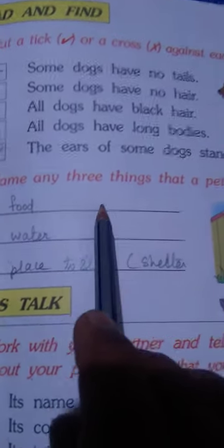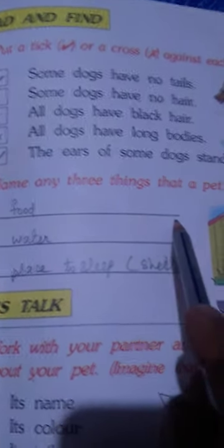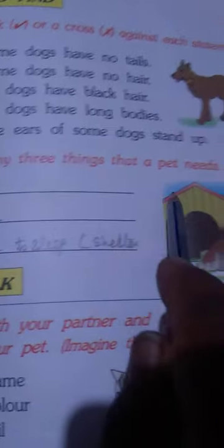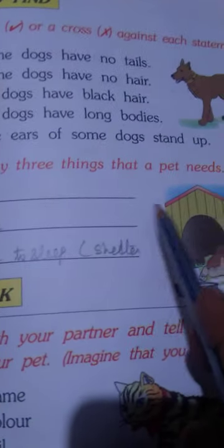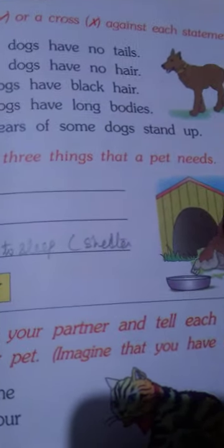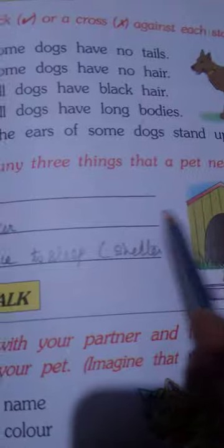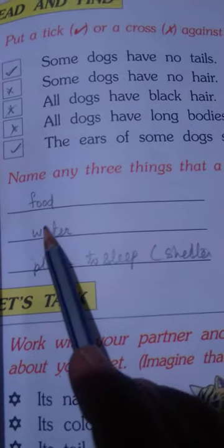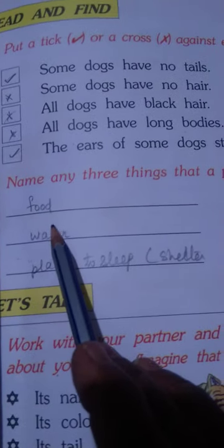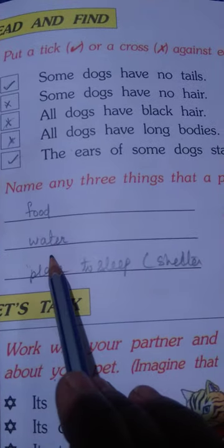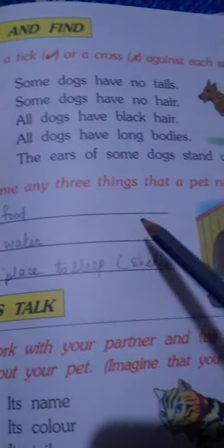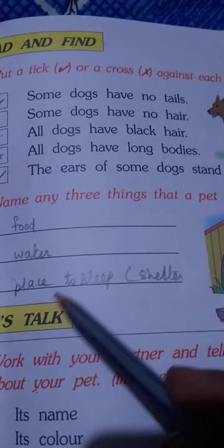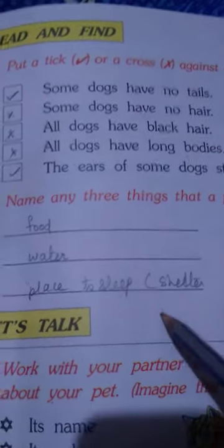Now, name any three things that a pet needs, children. What do they need? Food, water, and a place to sleep — shelter.